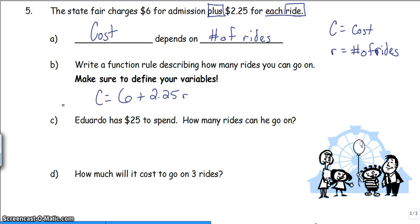I'm going to use it to analyze two different situations. If Eduardo has $25 to spend, how many rides can he go on? Well, he has $25, so the largest cost that he could handle is $25. So I take 25, substitute in for C. It equals $6 plus $2.25. Go ahead, hit pause, check your answer, solve it.